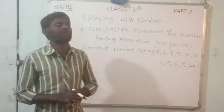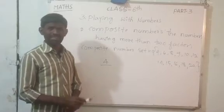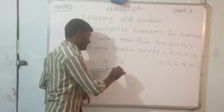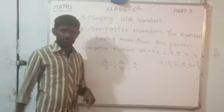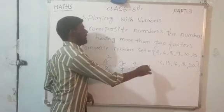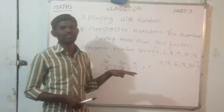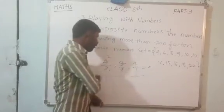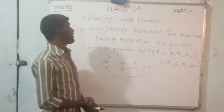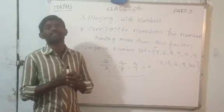Very simple, dear children. Take 4 — 4 is a Composite Number. 4 is divisible by 2, divisible by 4, and has a common factor 1. So 4 has 3 factors: 1, 2, and 4 — more than 2 factors. The numbers having more than 2 factors are called Composite Numbers.